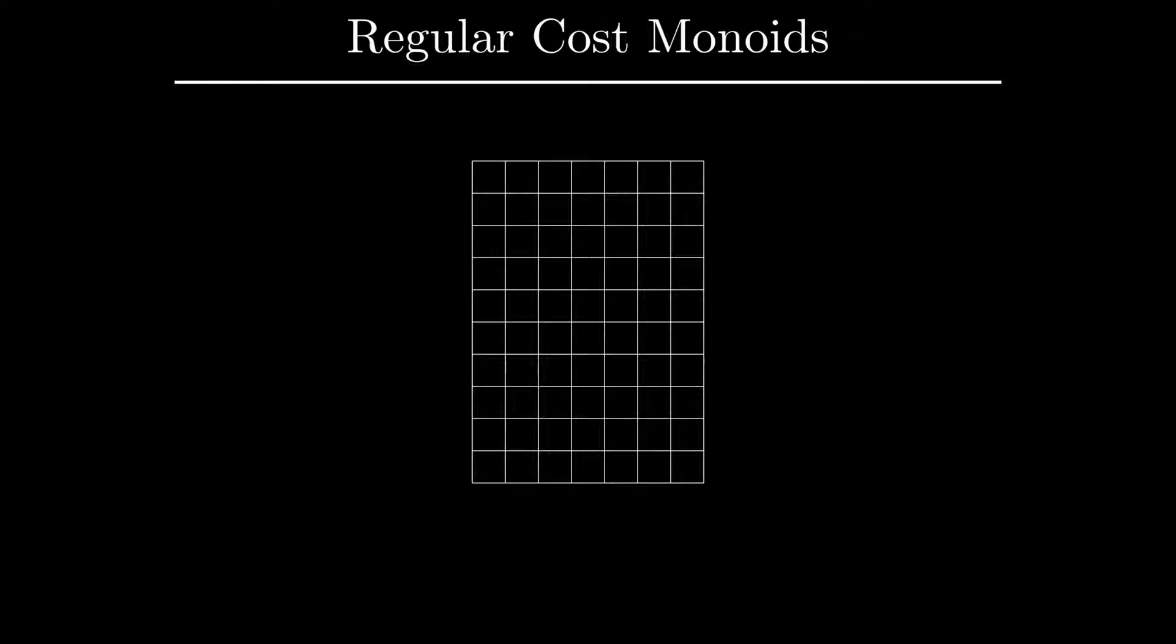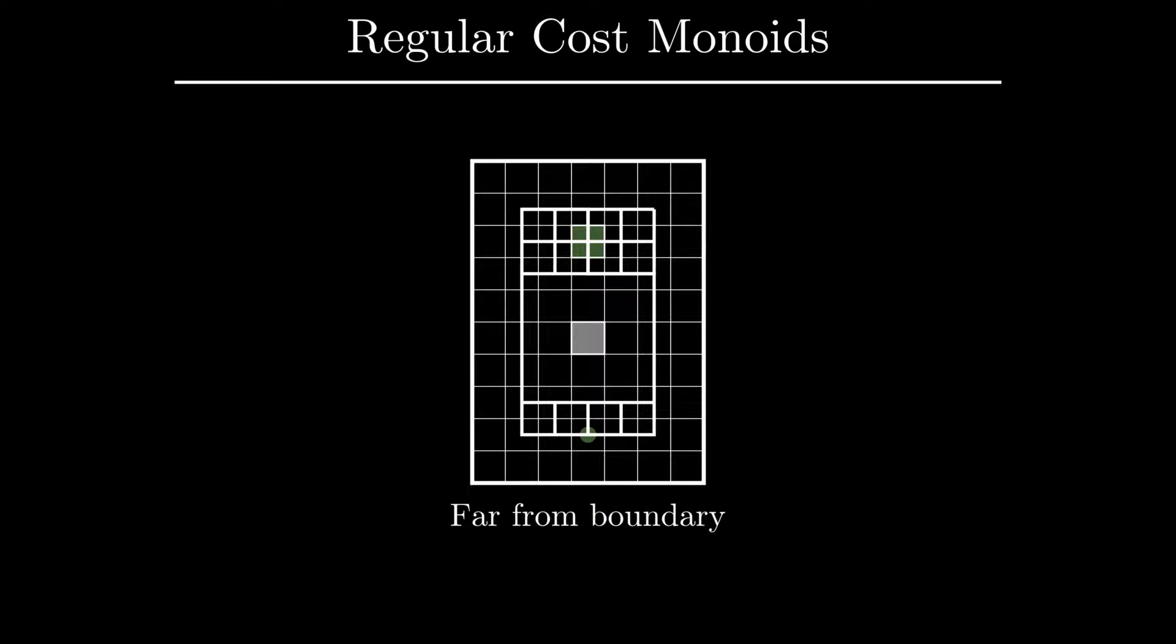Let us take one more look at the optimal subgraph. Recall that we consider the paths from the root to the goal, whose minimal distance to the obstacles is as large as possible. Since the optimal subgraph is defined to be the union of such paths, each edge in the optimal subgraph lies on an optimal path. Notice that in this particular case that you see on the board, any path within the optimal subgraph from the root to the goal turns out to be optimal. This statement is not automatic, for it is conceivable that multiple optimal paths can be combined into a suboptimal one.